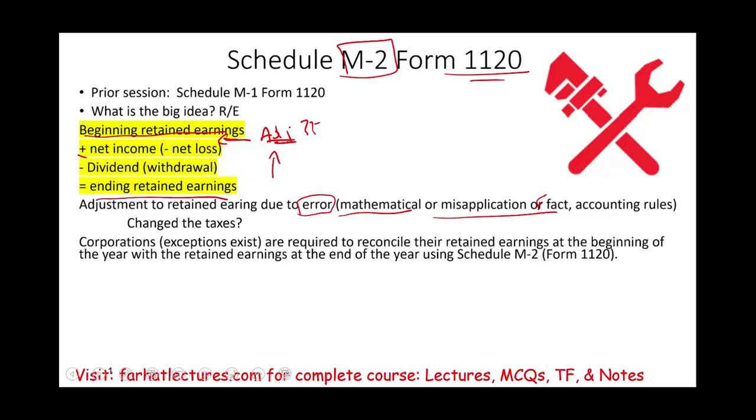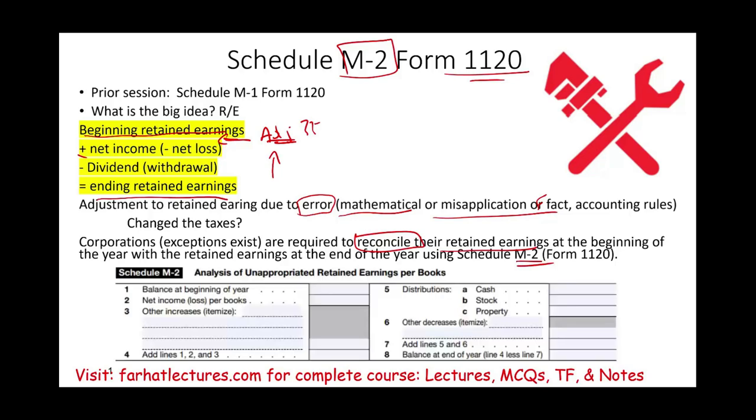Therefore, corporations are required to reconcile the retained earnings at the beginning of the year to the retained earnings at the end of the year using Schedule M-2. That looks something like this. And this is what Schedule M-2 would look like.